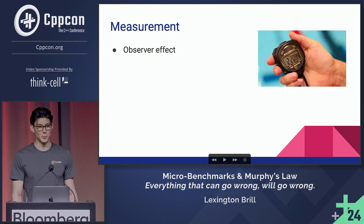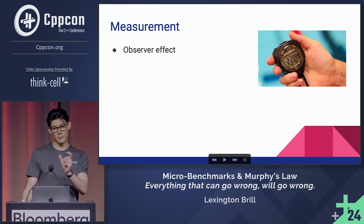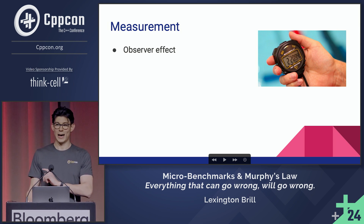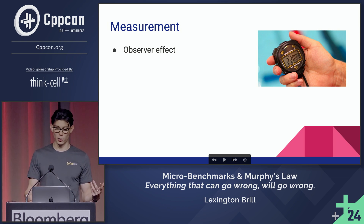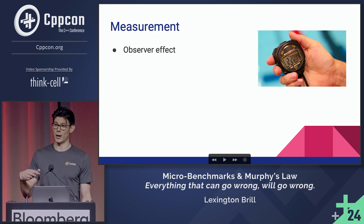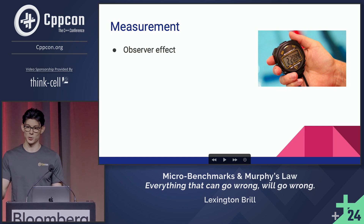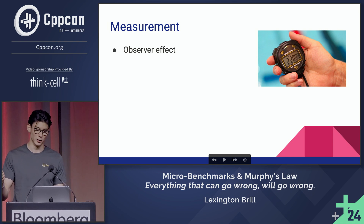The most important part about benchmarking is measurements — that's the goal of benchmarks, to measure things and compare them to each other. However, by measuring, you are incurring the observer effect, which means that when you perform a measurement, you are actually going to be impacting the result based on that measurement.